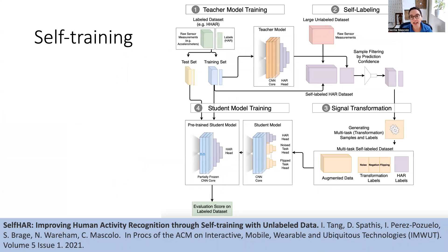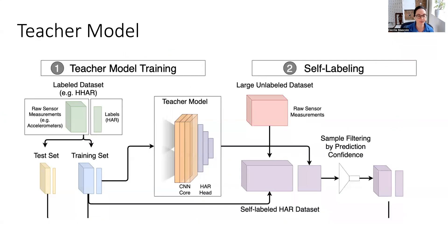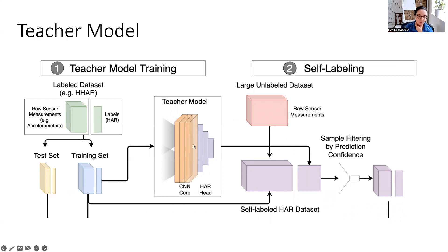A variation of this is the teacher-student model, which has been used quite extensively in deep learning. This is the full architecture — I'll describe the components one at a time. We assume we have a small labeled data set, split for training and testing. On the training data set, we train a model with some core component and a deep neural network fully connected layer.